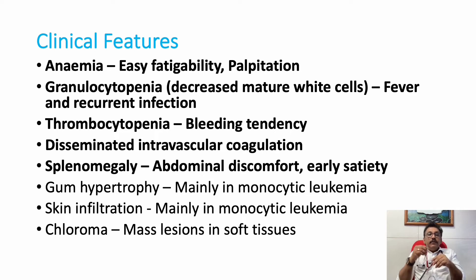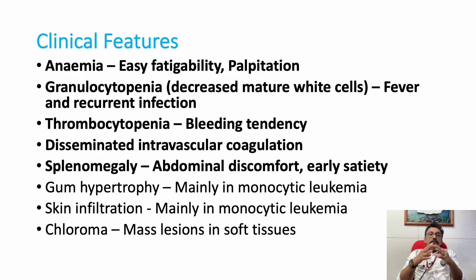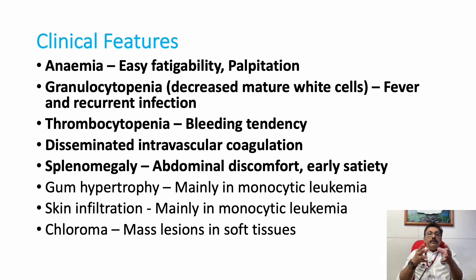Granulocytopenia means normal WBC counts are reduced. Abnormal counts may be increased, normal, or low. The mature myeloid cells — which prevent infection — are reduced. So whenever bacteria or viruses attack the body, the granulocytes cannot prevent these attacks. The patient can have fever, recurrent infections, sore throat, and abscesses.